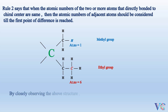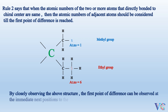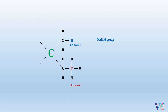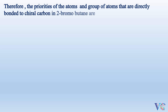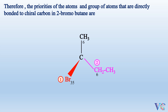By closely observing the structure, the first point of difference can be observed at the immediate next positions to the directly bonded carbon atoms. As the atomic number of carbon is more than hydrogen, the ethyl group gets priority over the methyl group. Therefore, the priorities in 2-bromobutane are: bromine — first priority, ethyl group — second priority, methyl group — third priority, and hydrogen — fourth priority.